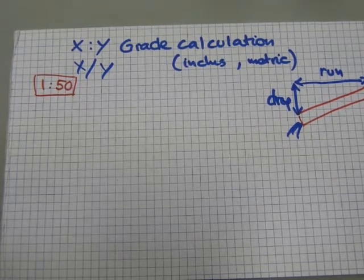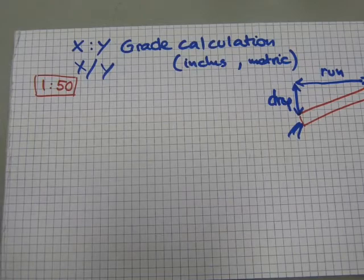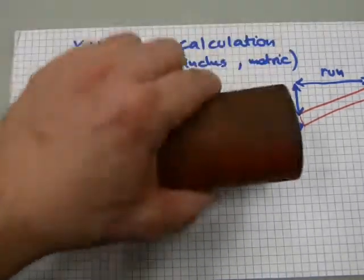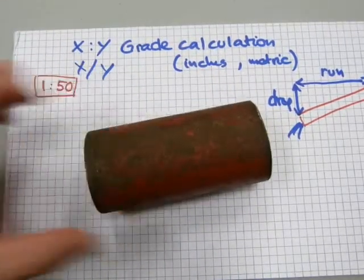In this video I'll show you another kind of grade calculations. Grade, again, relates to pipes, drain pipes, as they typically slope.